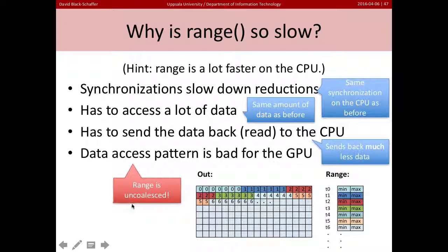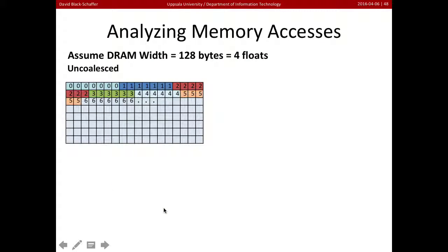And what it turns out is the access pattern is really bad. The range kernel we wrote is uncoalesced. So the access pattern is going to be very bad for the GPU. Let's take a look at this.